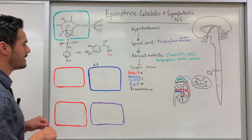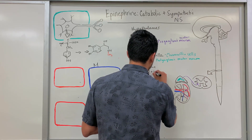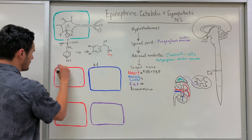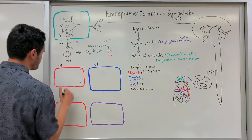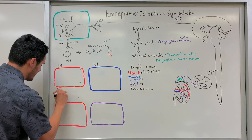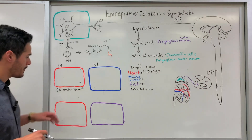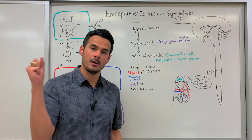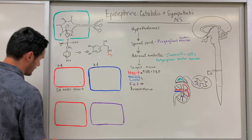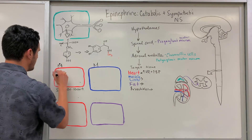The effect epinephrine has on the heart is to increase heart rate and blood pressure. This represents the SA node within the heart, which controls electrical signals within the heart. When epinephrine binds to its receptor on the SA node, it stimulates something very familiar — we get an increase in cyclic AMP.